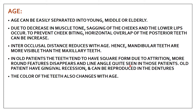In older patients, teeth tend to have a square form due to attrition. Because of this, you should select square-form teeth for elderly patients for a natural look. More rounded features disappear and line angles become prominent. Old patients may also have gingival recession, which can be reproduced in the denture. The color of the teeth also changes with age, becoming more yellowish due to attrition and enamel wear.